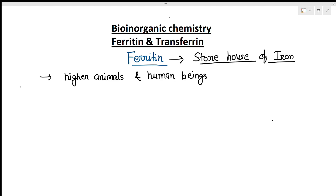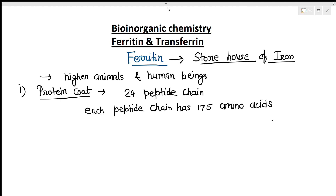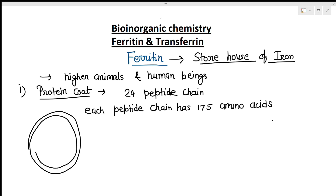Ferritin has a structure that is made up of three parts. The first part is the protein coat, which is the outermost layer. This protein is made up of 24 peptide chains, and each peptide chain has 175 amino acids. These peptide chains are coiled together in an ellipsoid form, making a coat like this — this is called the protein coat.